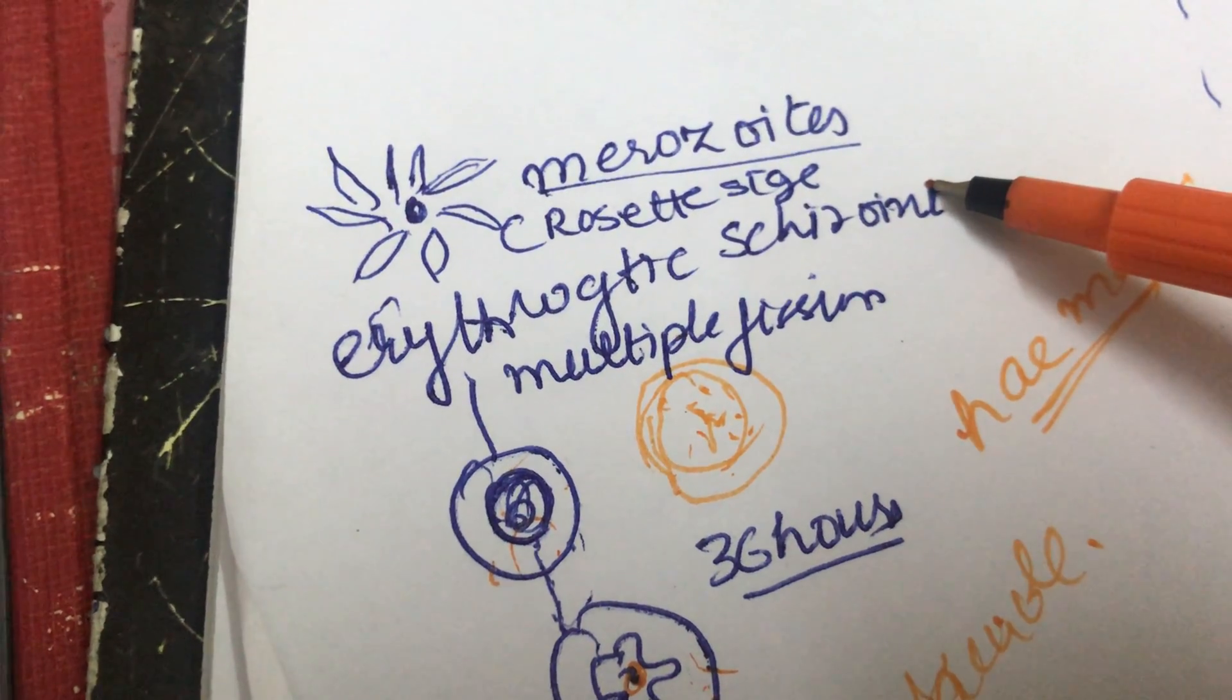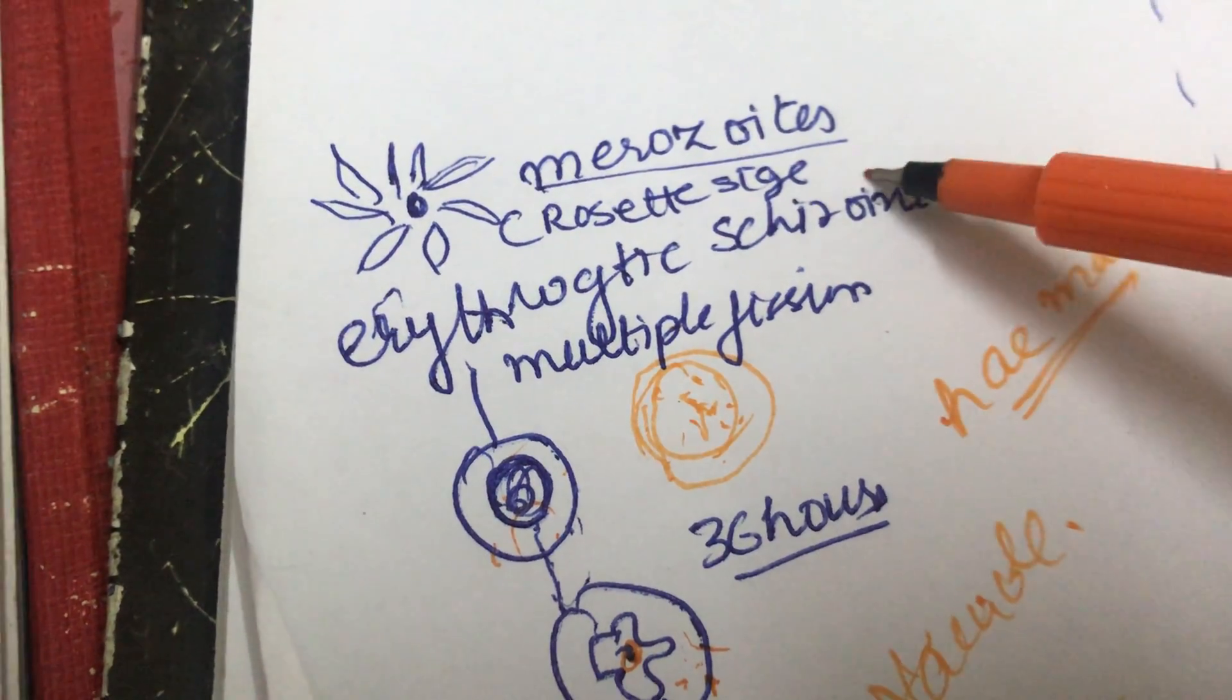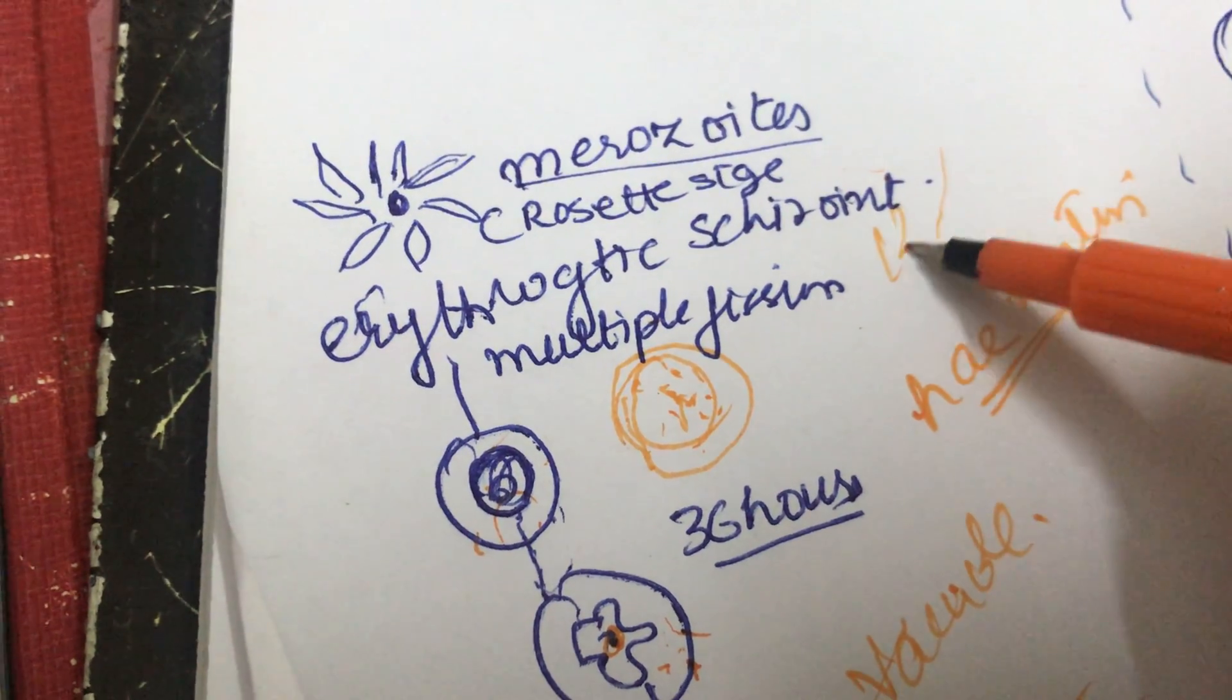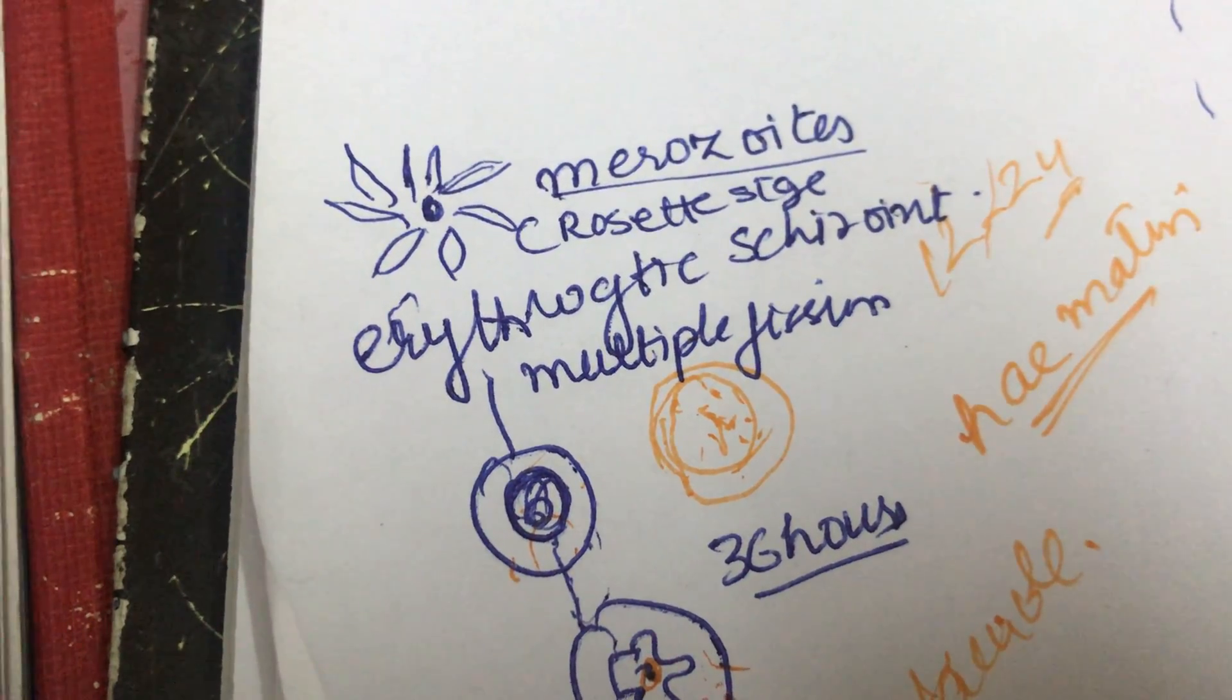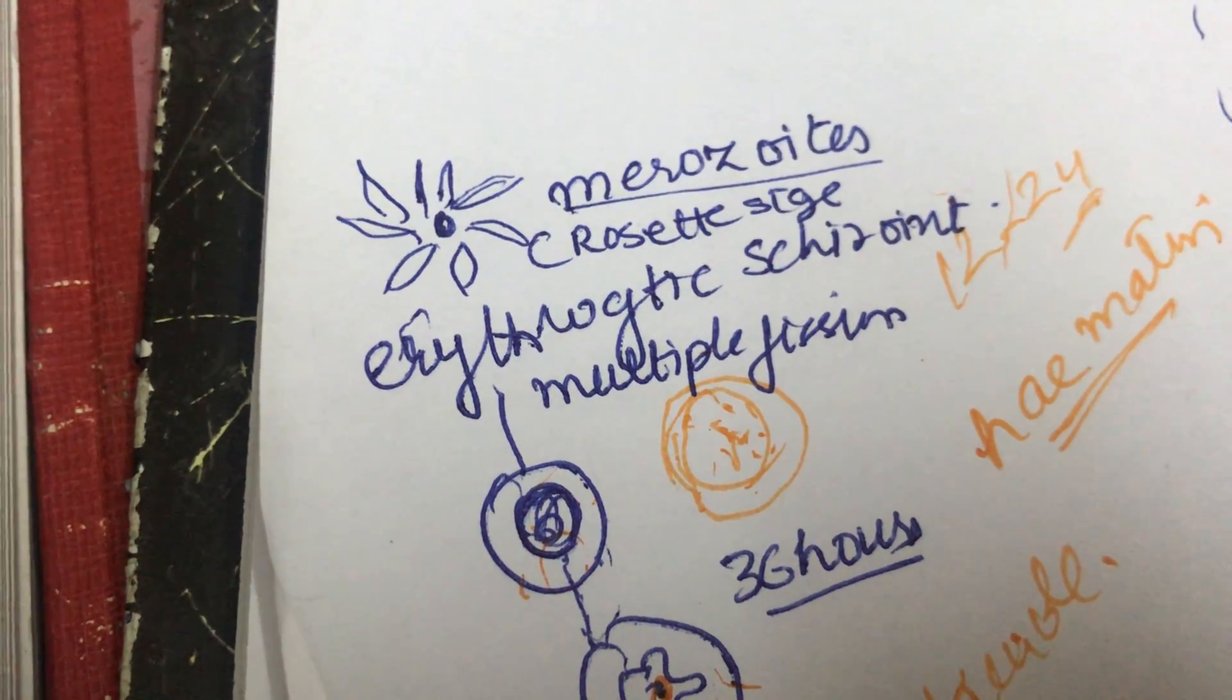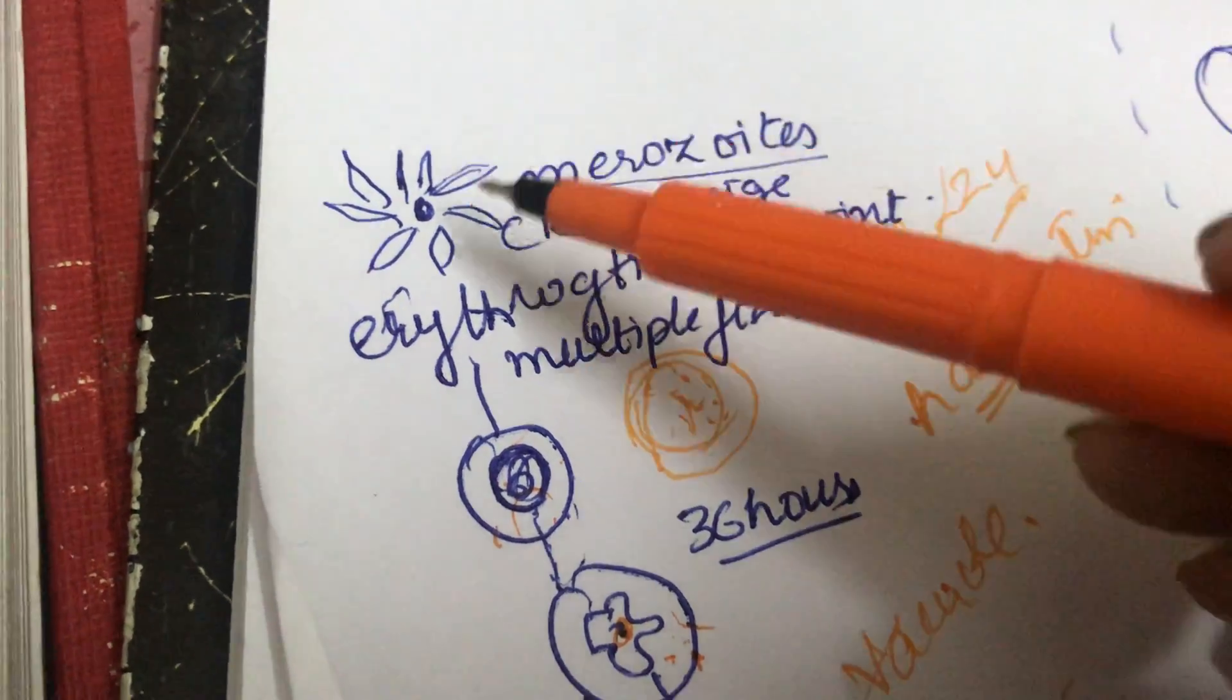In erythrocytic schizoent, its nucleus divides to form about 12 to 24 tiny nuclei. These later lie near the surface, leaving the hematin in the center.